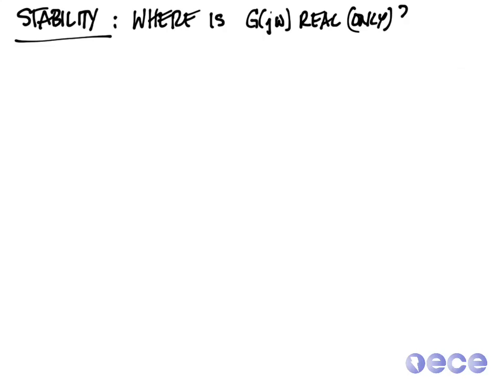So where is G of j omega only real? This is going to tell us where we cross on the left hand side of sigma equals a negative number and j omega equals 0. So let's check where G of j omega is real. Now we take our original transfer function G of j omega, and I'm going to multiply through the denominator.